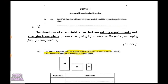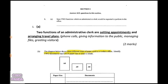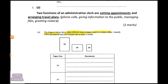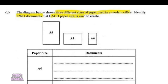The first question asks you to state two functions which an administrative clerk would be expected to perform in the office. This is basically just a secretary. If you use your imagination, any of the things you could picture a secretary doing would be viable answers. Using a bit of text logic, I went with setting appointments and arranging travel plans. You could also have said phone calls, giving info to the public, managing files, or greeting visitors.